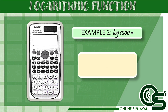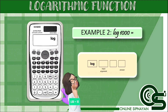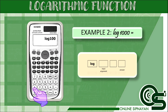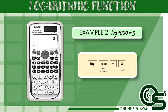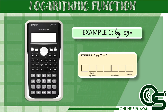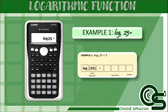Next example: logarithm of 1000 is equal to 3. Here, just press log, then input the argument which is 1000, and press equal — the answer will be 3. If your calculator does not support direct base input, press log, input the argument 25, press division, then log again, then input the base 5, and press equal — it must be equal to 2.